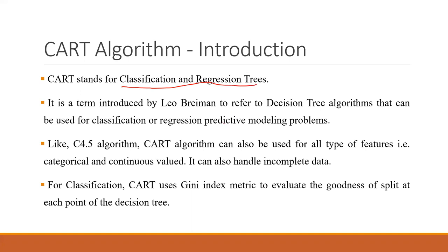Leo Breiman gave this decision tree that can be used for both classification and regression. Like C4.5, CART can handle both categorical and continuous values, and it can also handle incomplete data.